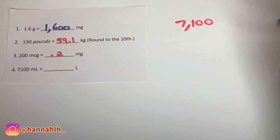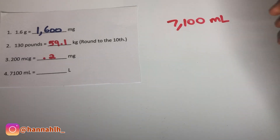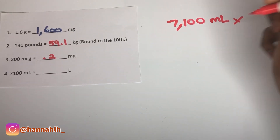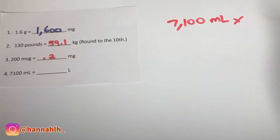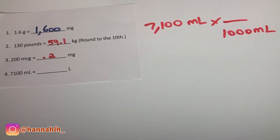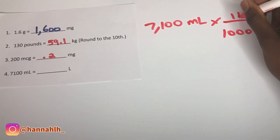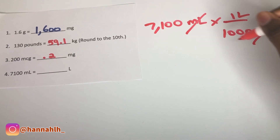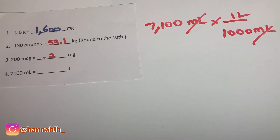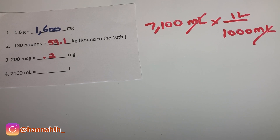Number four: convert 7,100 milliliters to liters. 1000 milliliters is going to equal one liter. You want to cancel out the milliliters, so 7,100 divided by 1000 gives you 7.1 liters.